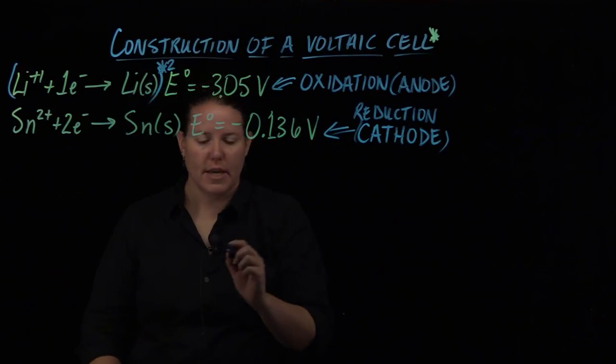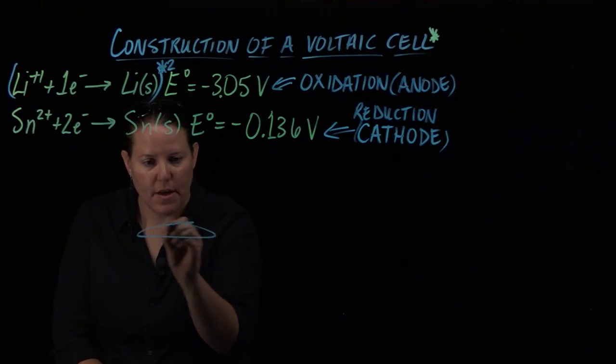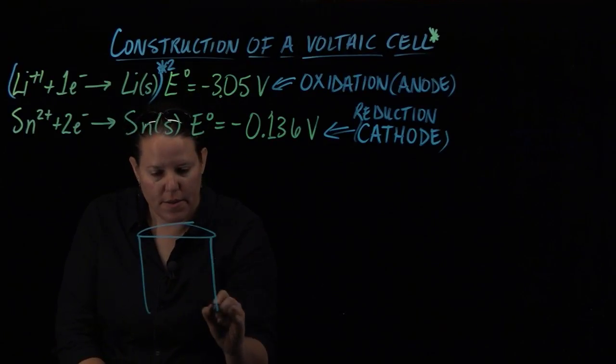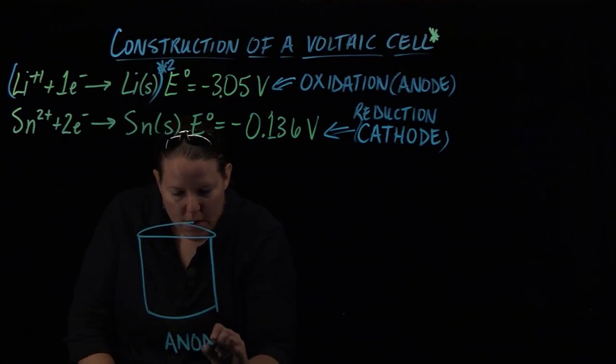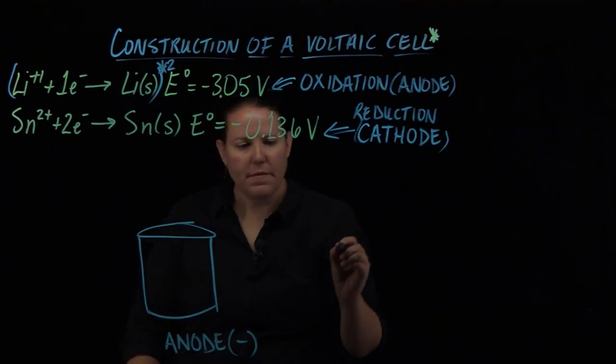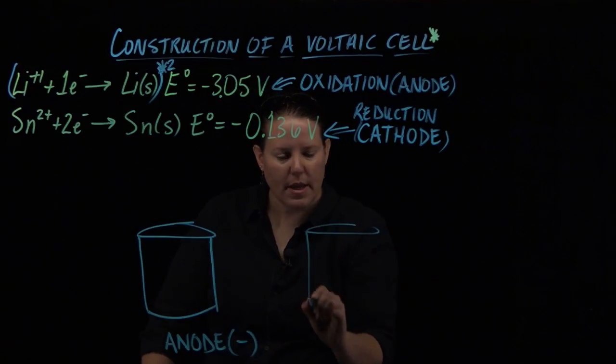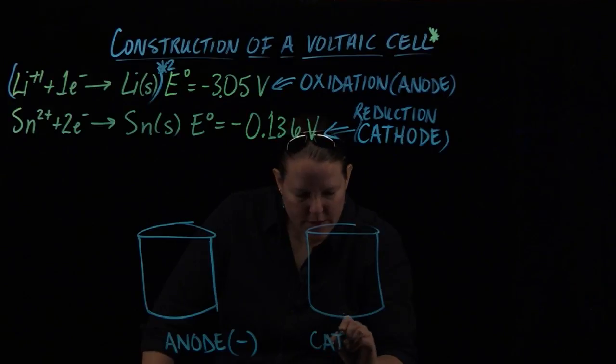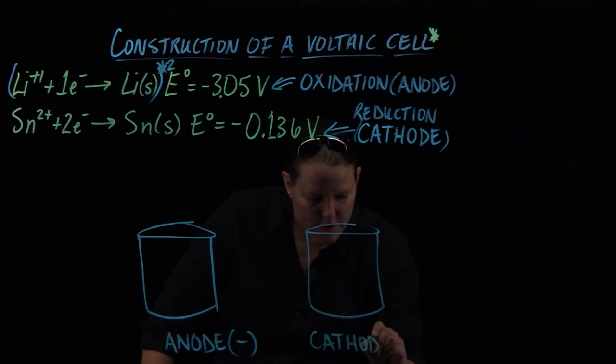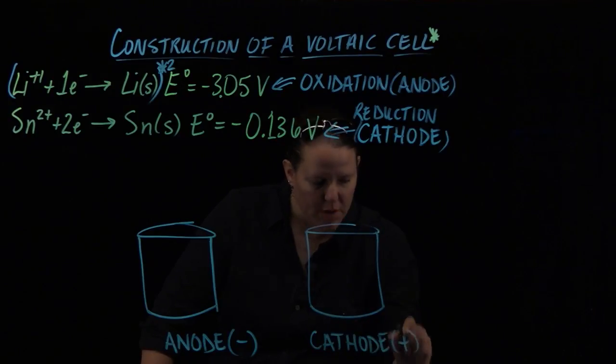We know that since lithium is the anode, we're going to draw that on the left side. The anode always goes on the left, the cathode always goes on the right, unless you're trying to be tricky, which hopefully you wouldn't be.